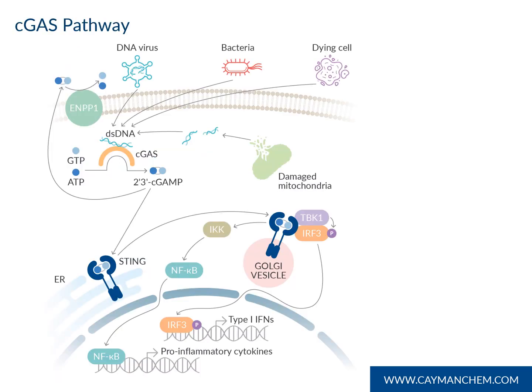First, a little background on the C-GAS pathway. The C-GAS STING pathway has been receiving a lot of attention recently for the role it plays in cancer, innate immunity, and autoimmune diseases. For the purpose of this talk, we'll focus on the upstream C-GAS pathway. Cyclic GMP-AMP synthase, or C-GAS, is a cytosolic DNA sensor which detects the presence of pathogenic DNA, catalyzing the production of 2-3 cGAMP. 2-3 cGAMP is produced by C-GAS and is degraded mainly by ENPP1, producing AMP and GMP. The measurement of 2-3 cGAMP can provide a readout of C-GAS or ENPP1 modulation.